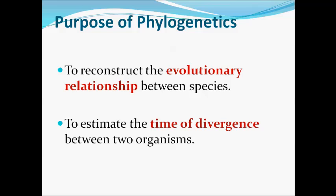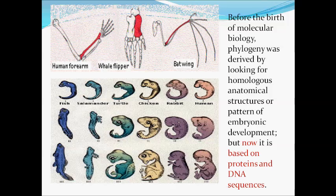It has been postulated that closely related organisms have similar sequences, while more distantly related organisms have more dissimilar sequences. Hence, one objective is to reconstruct the evolutionary relationship between species. Another objective is to estimate the time of divergence between two organisms since they last shared a common ancestor.